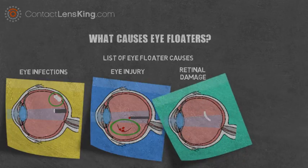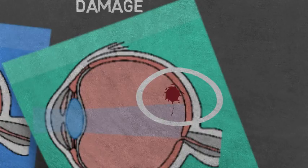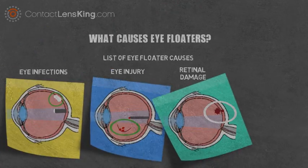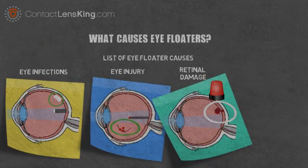Retinal damage. This type of disorder can sometimes be a result of the fluid in the eye clumping up and manifesting into floaters, possibly even resulting in retinal tearing. This disorder can be quite severe and even lead to complete blindness if not treated in time.